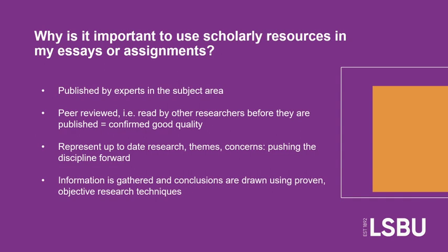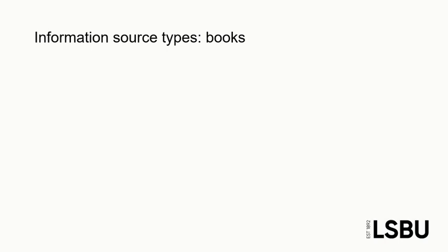As mentioned on the previous slide, scholarly sources follow a rigorous and controlled research process. They draw conclusions based on data or evidence collected, and the researchers take steps to avoid bias which can lead to inaccurate conclusions. I'm now going to talk you through three of the key scholarly information types you are likely to use in your time at university — the general purpose of each source type and when you might want to use it in research, as well as some of the strengths and weaknesses the source has.